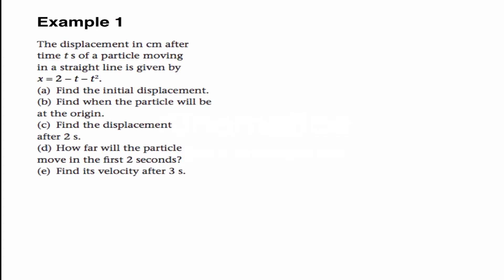So for example, the displacement in centimeters after a time t seconds of a particle moving in a straight line is given by the function x equals 2 minus t minus t squared. Find the initial displacement. So whenever you see the word initial, you're thinking to yourself, I want to find the value of the function x when t equals 0. So we're simply substituting into our function x here. And if we do that, we find x at 0 is equal to 2 centimeters.